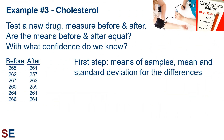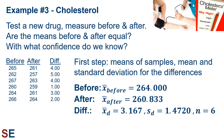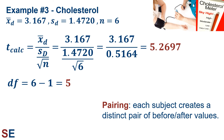For our third example, we ask whether an experimental drug alters cholesterol levels. We collect study subjects and measure cholesterol before and after taking the drug. The differences for six individuals are calculated. The mean cholesterol before the drug was 264 and after was 260.833, suggesting the drug may lower values. For the differences, the mean is 3.167 with a standard deviation of 1.4720 based on six differences. Plugging into the equation gives t-calculated = 5.2697, with 5 degrees of freedom. The pairing is justified because each pair of cholesterol values is specific to a unique individual before and after taking the drug.